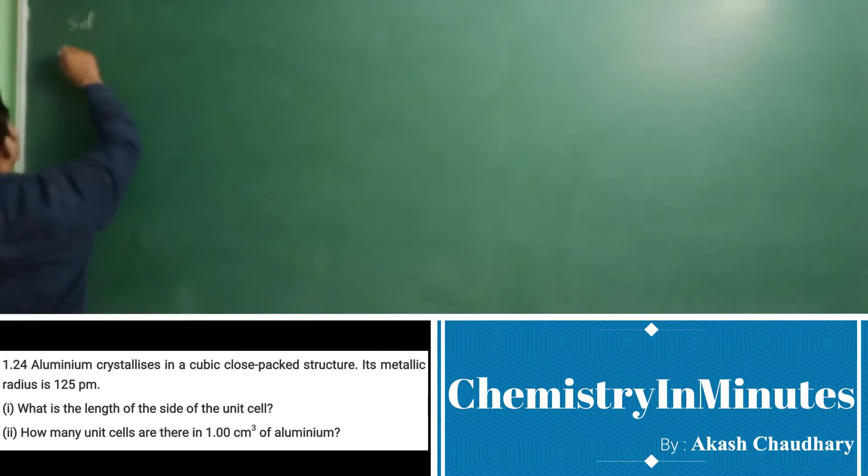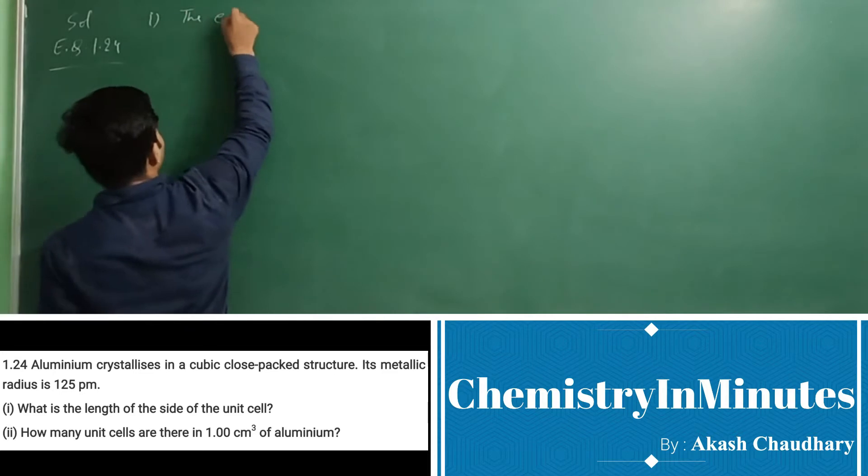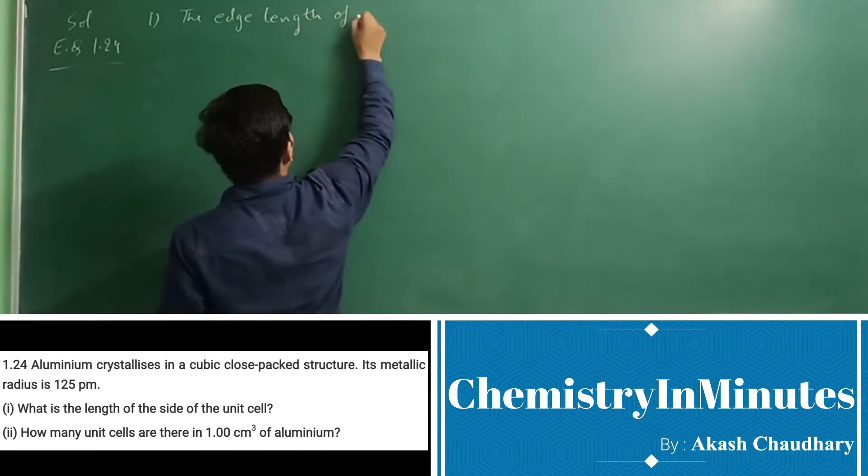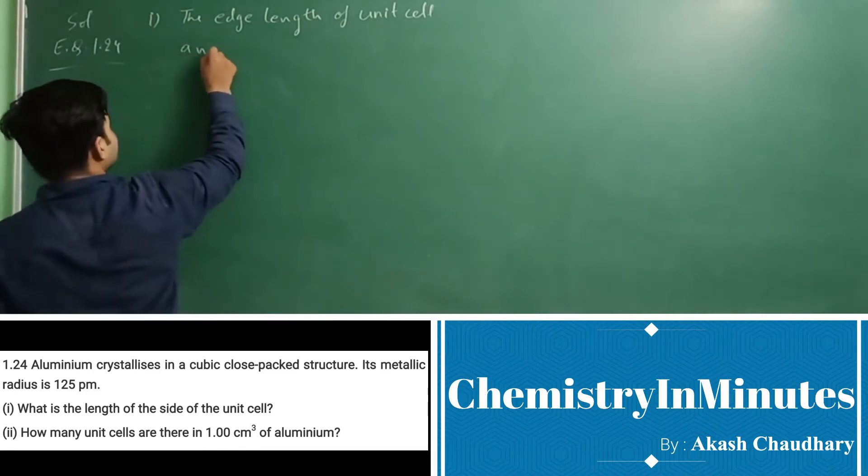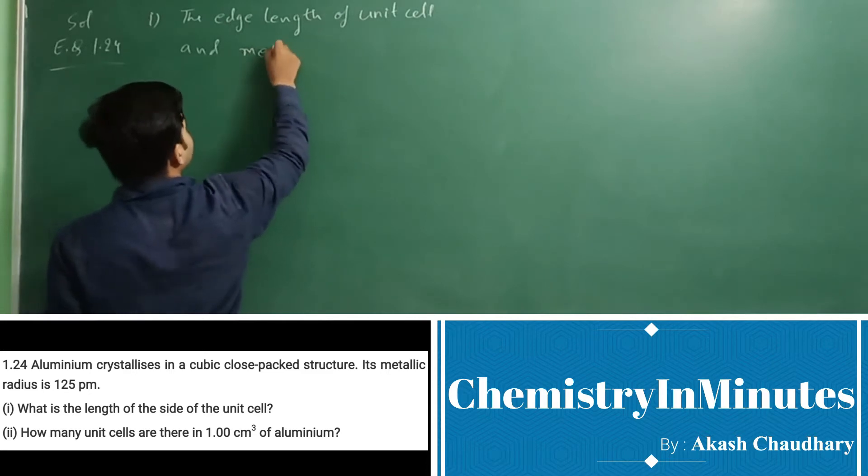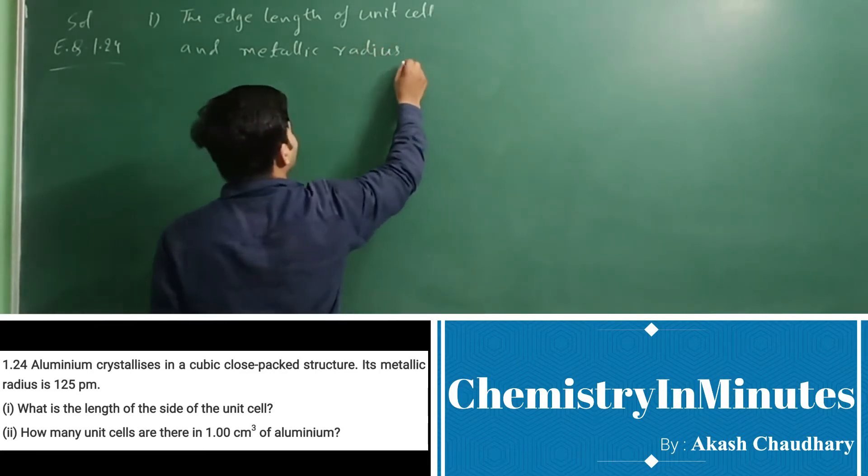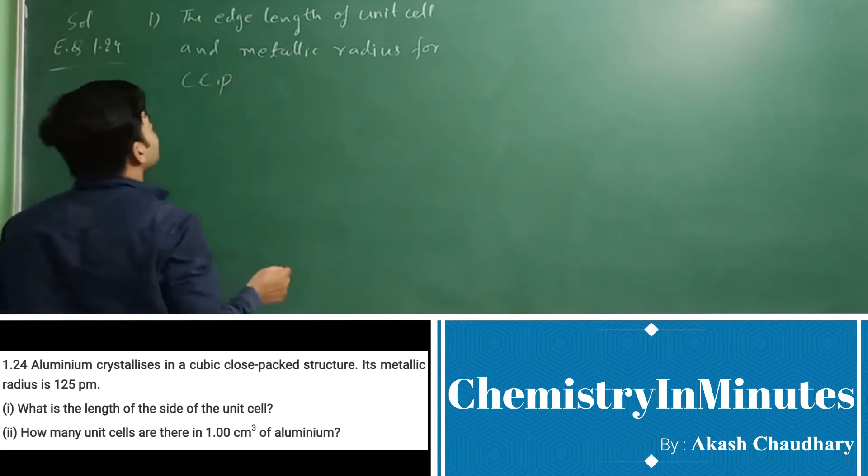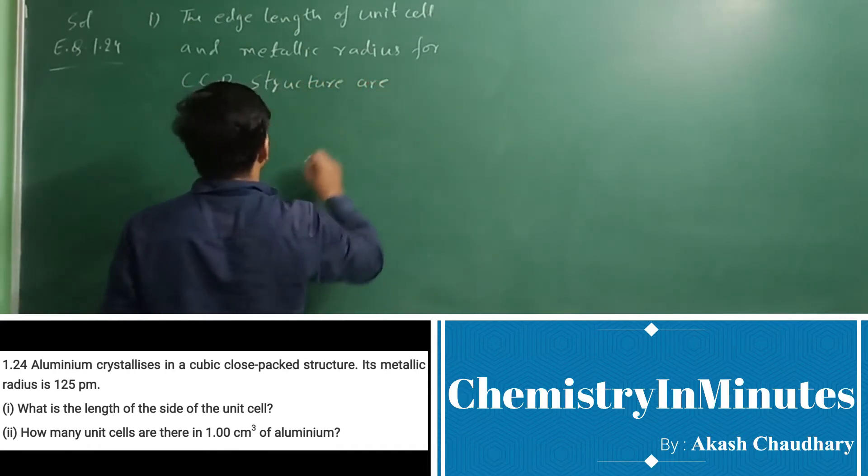Solution to exercise question 1.24. For first part, the edge length of unit cell and metallic radius for CCP, that is cubic closed packed structure, are related as